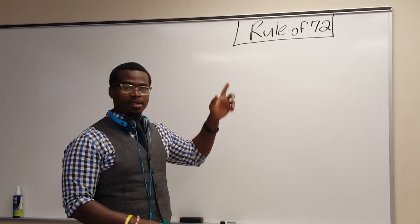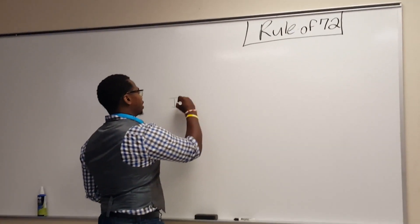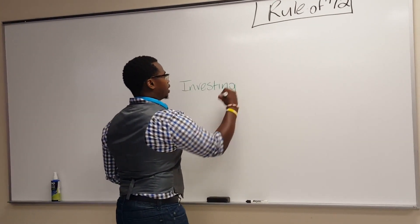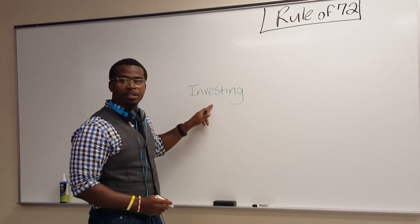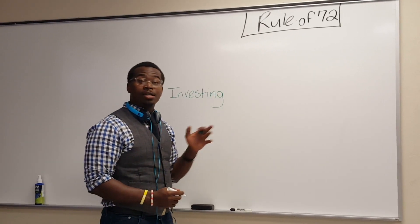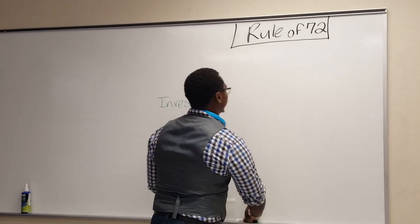So the Rule of 72 works like this. It's about investing, simply about investing. We're going to be talking about this for a few months. We want to teach you all how to invest, but when you're investing, we want to teach you what to look for. So the Rule of 72 teaches you how long it's going to take your money to double. It's called compound interest. So let me show you how this works.